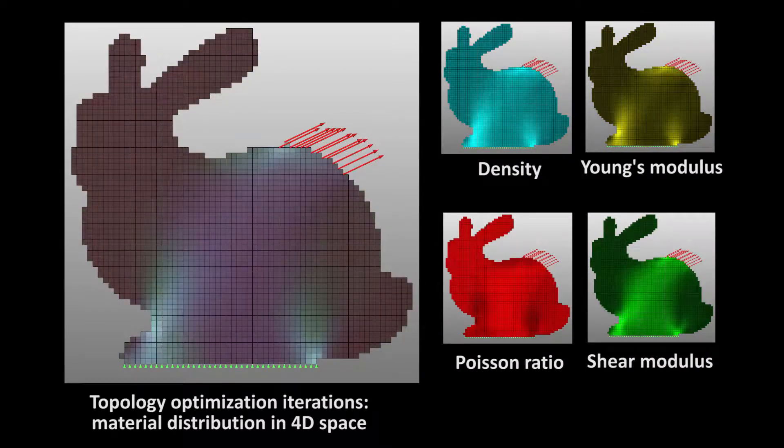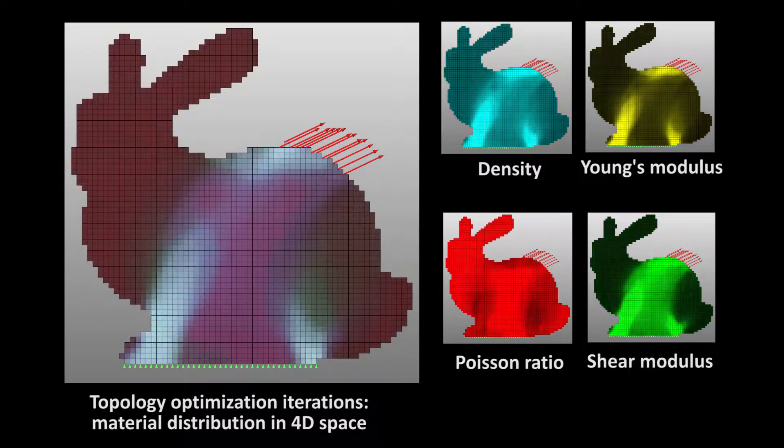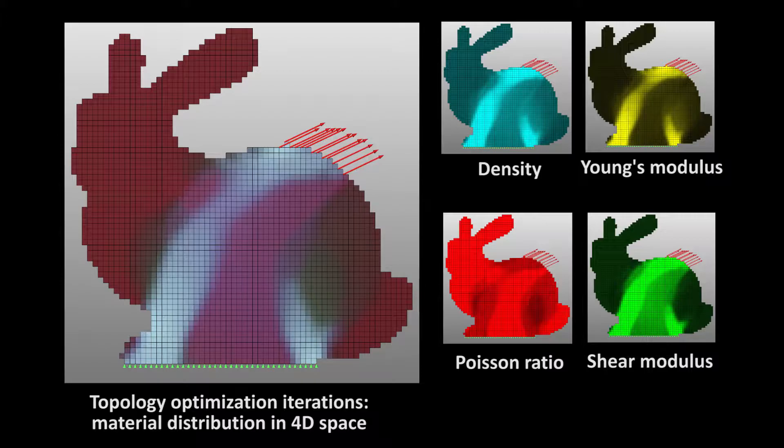For example, here we show the iteration to optimize the material distribution of a 2D bunny with four material properties.